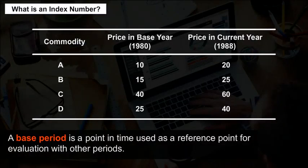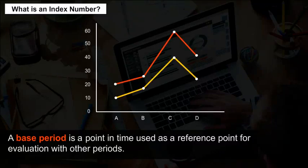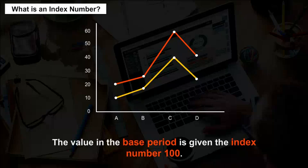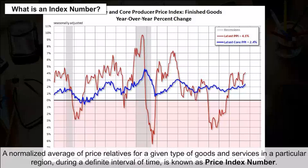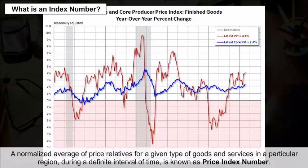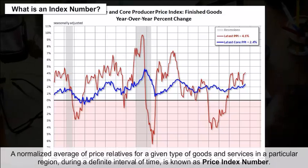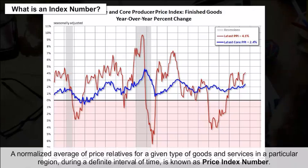A base period is a point in time used as a reference point for evaluation with other periods. The value in the base period is given the index number 100. A normalized average of price relatives for a given type of goods and services in a particular region during a definite interval of time is known as a price index number.